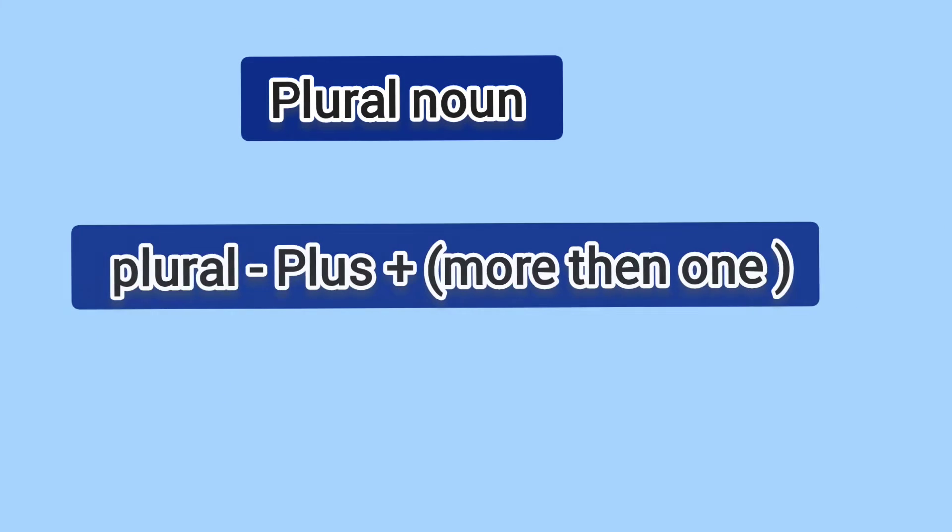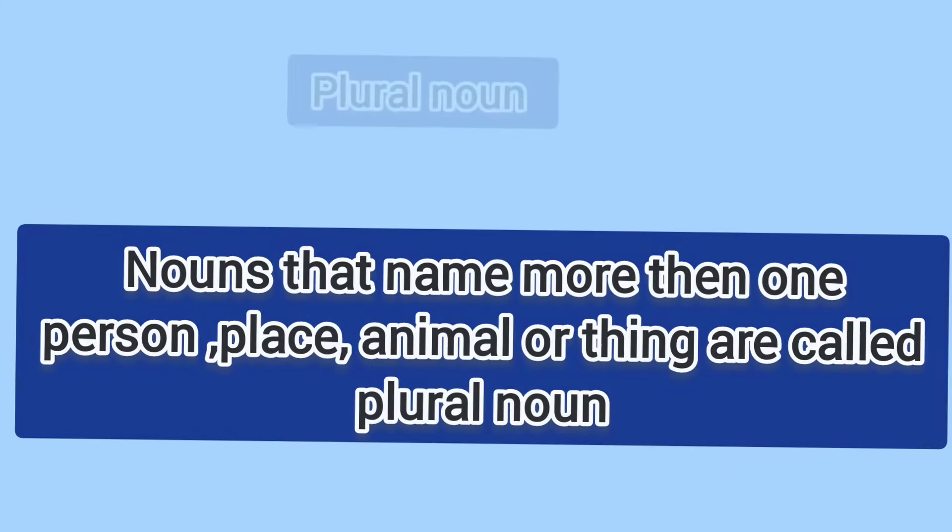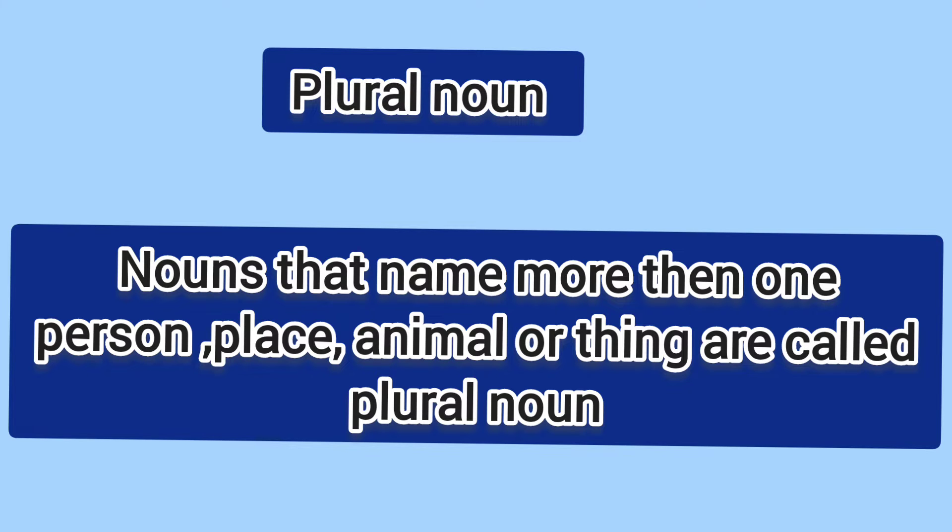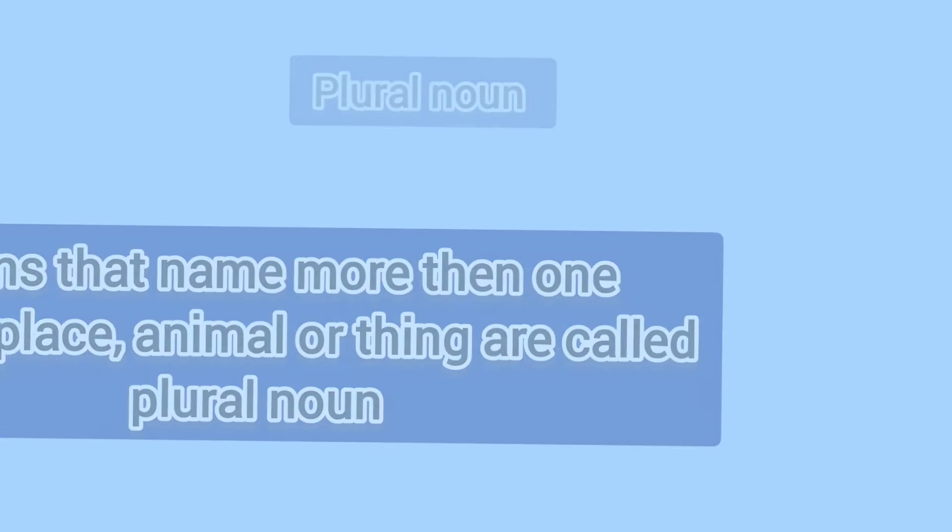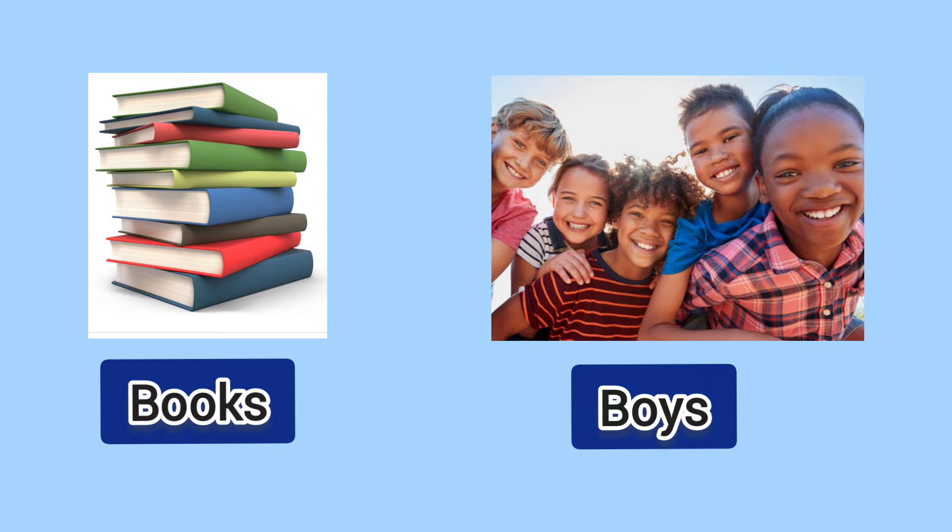Nouns that name more than one person, place, animal, or thing are called plural nouns. For example: books, cities, boys.